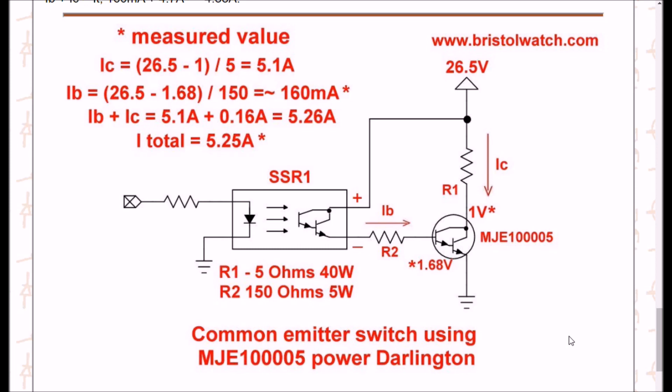Here is the same circuit as previously, same circuit values and everything, but I use the MJE10005 power Darlington. My emitter-base voltage drop was 1.68 volts. Of course, R2 again was 150 ohms, 5 watt. R1 was a 5 ohm load at 40 watts. My input voltage is 26.5 volts, and here's my calculations versus my measured values.